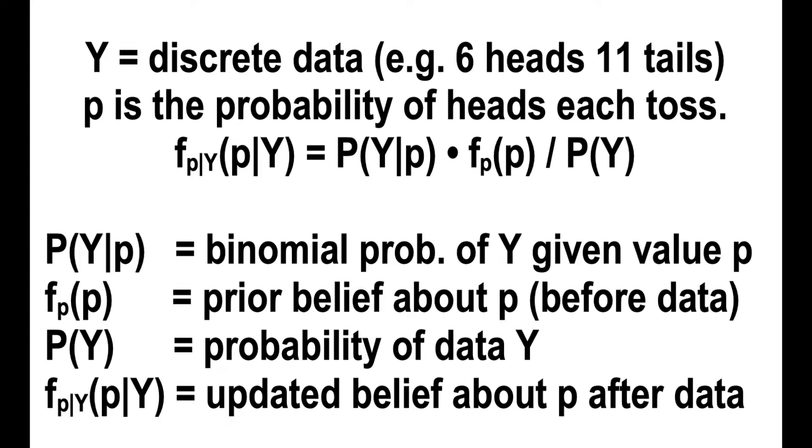f of p is the density describing what we believe in advance about the possible values of p. P of Y is just the discrete probability of getting specific data values Y. And f of p given Y is going to be the updated belief about p after the data, which is the solution to the statistics problem.